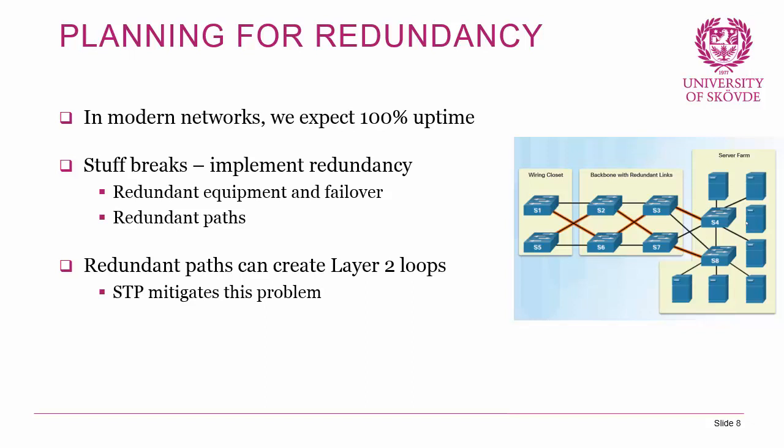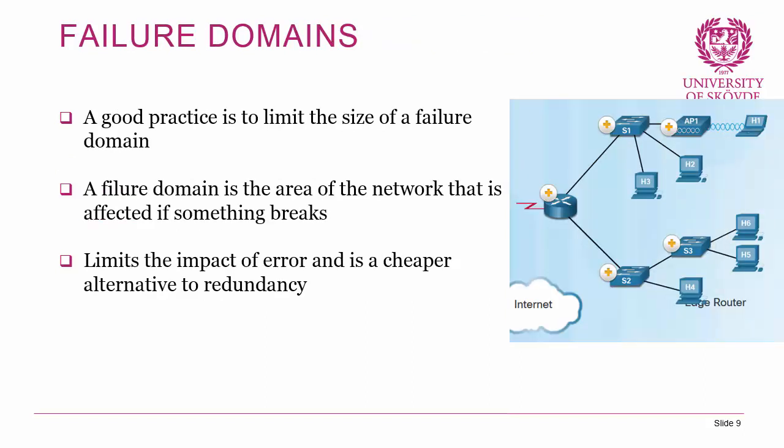Something important to know about redundant links is that they can create layer 2 loops. Layer 2 frames do not have a time-to-live field, so if you have a layer 2 loop, it will remain in your network basically forever — eventually breaking your switches. Fortunately, Spanning Tree Protocol mitigates this problem, and we're going to explore that in a later lesson.